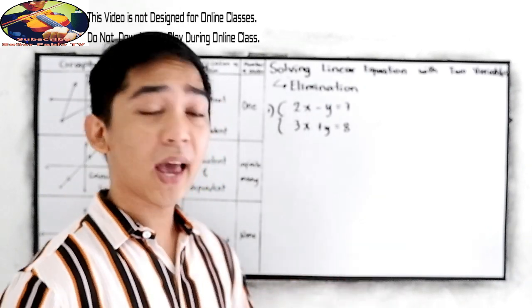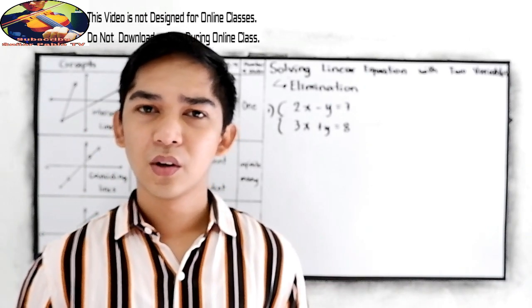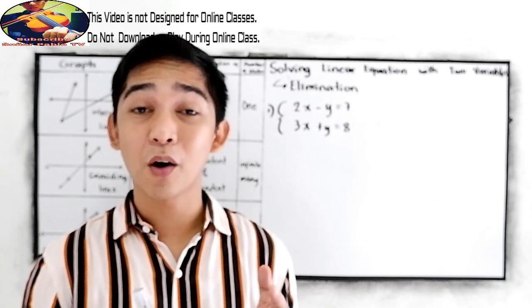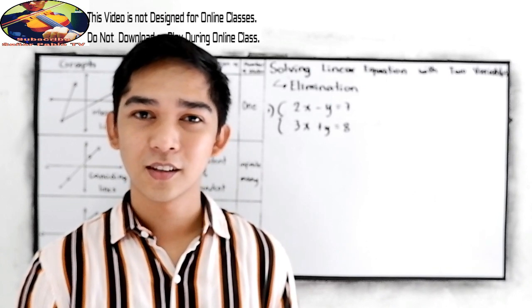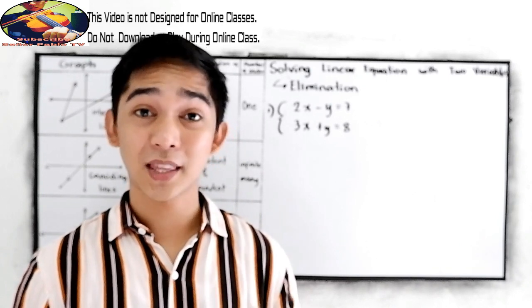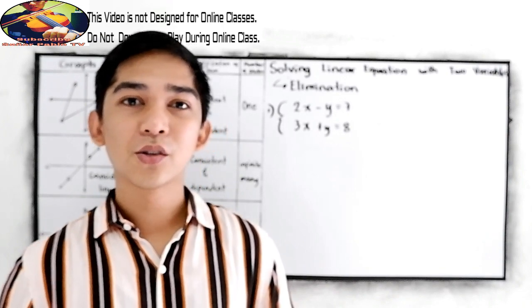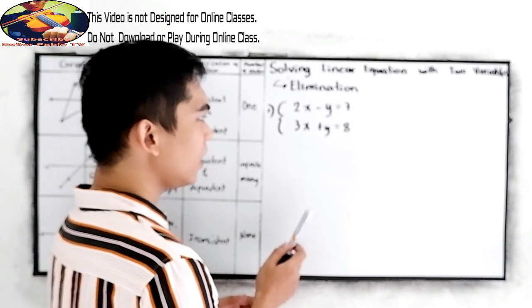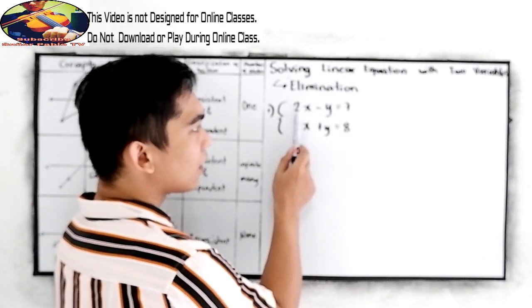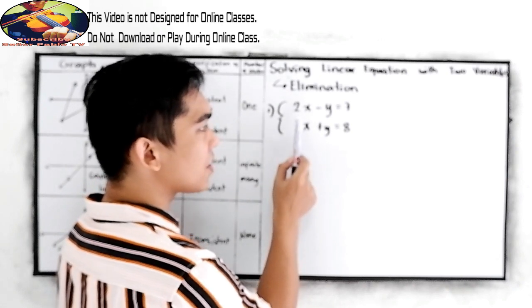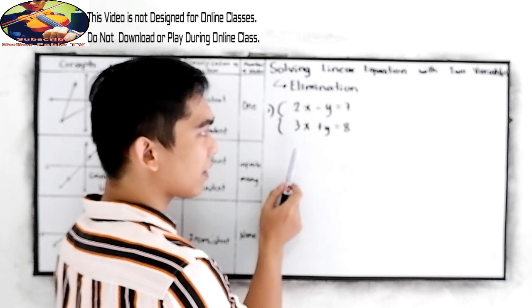So since we are in the elimination method, we need to eliminate one of our variables. Let's say we're going to eliminate our x. So our goal is the coefficient must be the same. In this case, they are different.